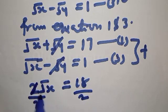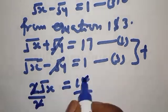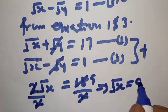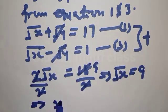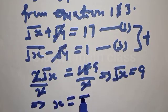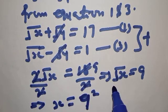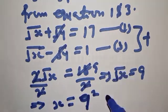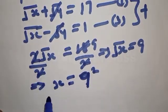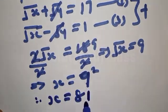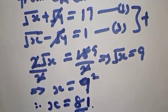Dividing both sides by 2, the 2's cancel and we get square root of x equals 9. Squaring both sides, the square root is removed, and x equals 9 squared, therefore x equals 81.